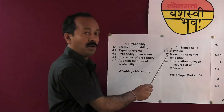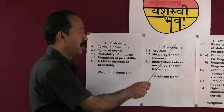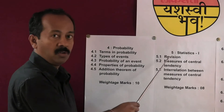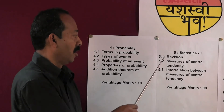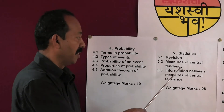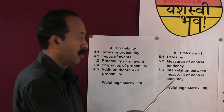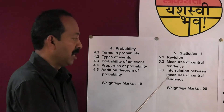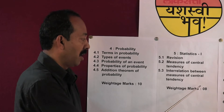Chapter 5: the name of the chapter is Statistics Part 1. The important contents are: Revision, Measures of central tendency, and Interrelation between measures of central tendency. The weightage of marks for this chapter is 8.